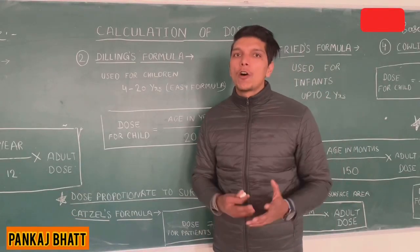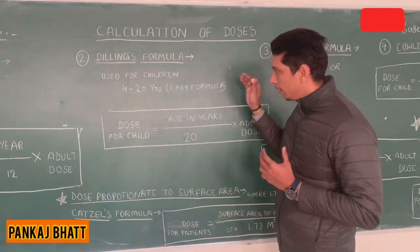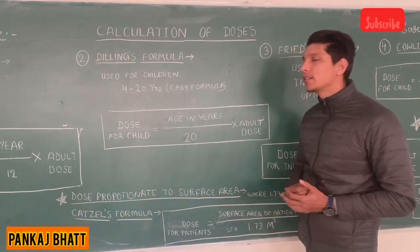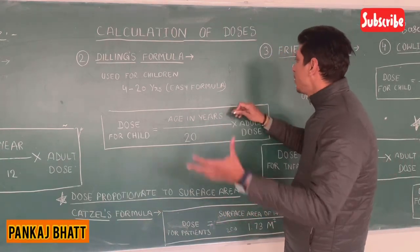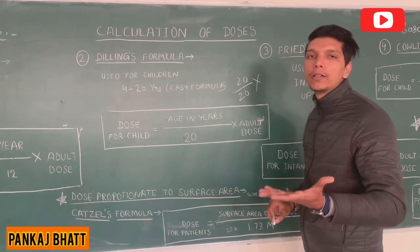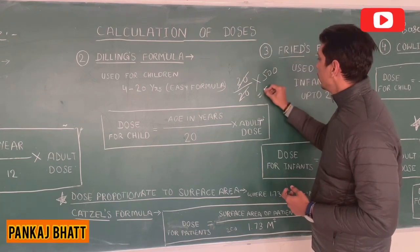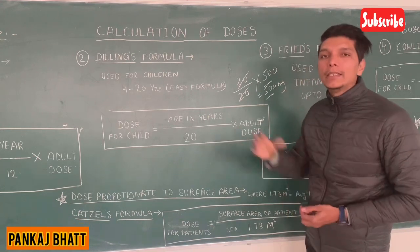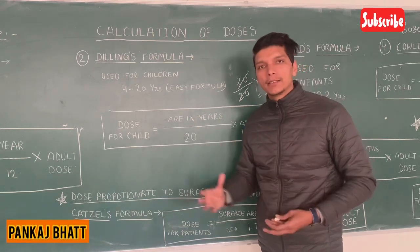Another formula is Dilling's formula. According to Dilling's formula, this formula is based on patients aged 4 to 20 years. The dose for child equals age in years upon 20 into adult dose. For example, if the age of the patient is 20 years: 20 upon 20 into adult dose of 500mg equals 500mg.